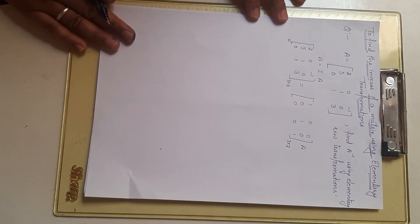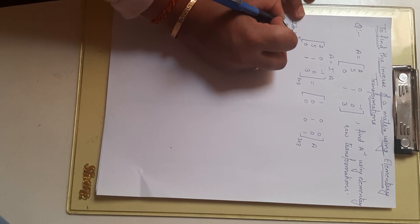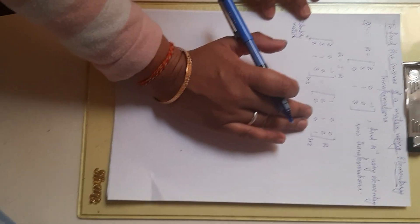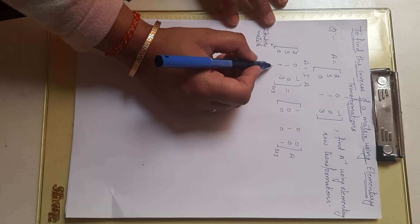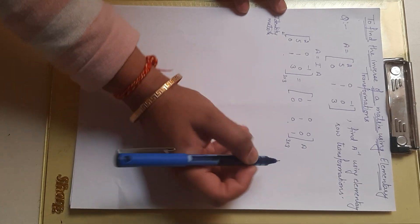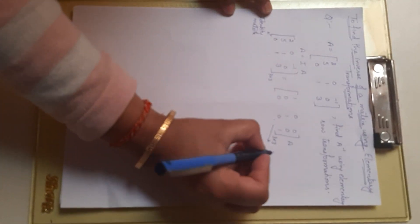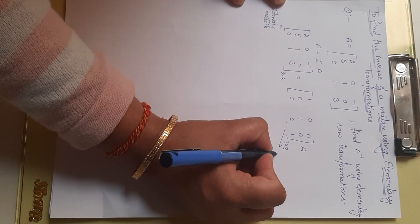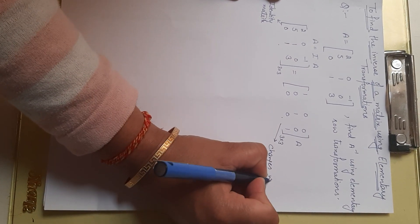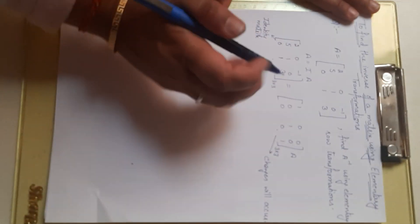We have to make this matrix A into an identity matrix. Automatically, the changes will occur in the identity matrix side — whatever operation we apply to the left matrix will automatically occur on the right matrix, and that right matrix will become A inverse. We will follow the rule of first changing the very first column into [1, 0, 0].